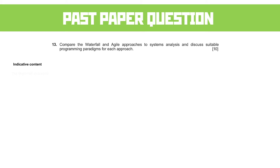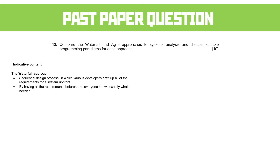One of the first things about the waterfall approach is that it's sequential design, in which developers draft up all the requirements for a system before starting. By having all the requirements beforehand, everyone knows exactly what's needed. Clients know what to expect including the timeframes, the size, the cost — they know exactly what their product does in advance of development starting, because everything has already been planned out.